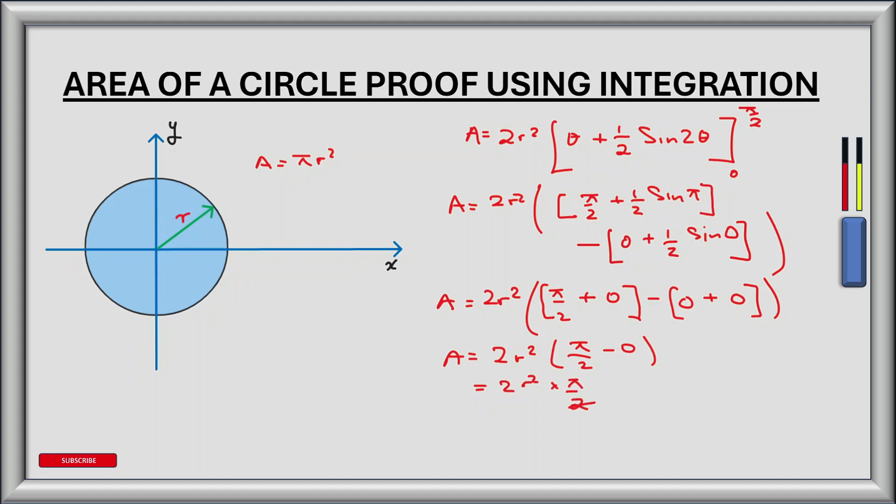2's cancel out, and our area is equal to pi r squared.